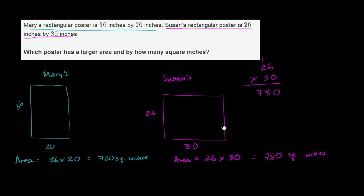Which poster has a larger area? Susan's. Susan's poster has a larger area. And by how many square inches? Well, hers is 780 square inches, while Mary's is 720 square inches. So it's by 60 square inches. 780 minus 720 would be 60.